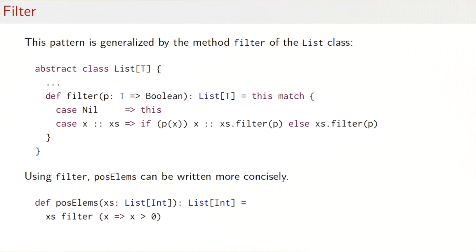Again, this pattern can be generalized to a method filter in the list class. So here you see the definition of filter. It takes now a predicate that takes an element of the list element type T and gives you back a boolean. And it will return a list of T's. The definition is an obvious generalization of posElems that you've seen before. We match on the current list. If it's nil, then we return the nil list. If it's not nil and the head of the list XS satisfies our predicate, so P of X is true, then we return X followed by XS dot filter P and otherwise just XS dot filter P.